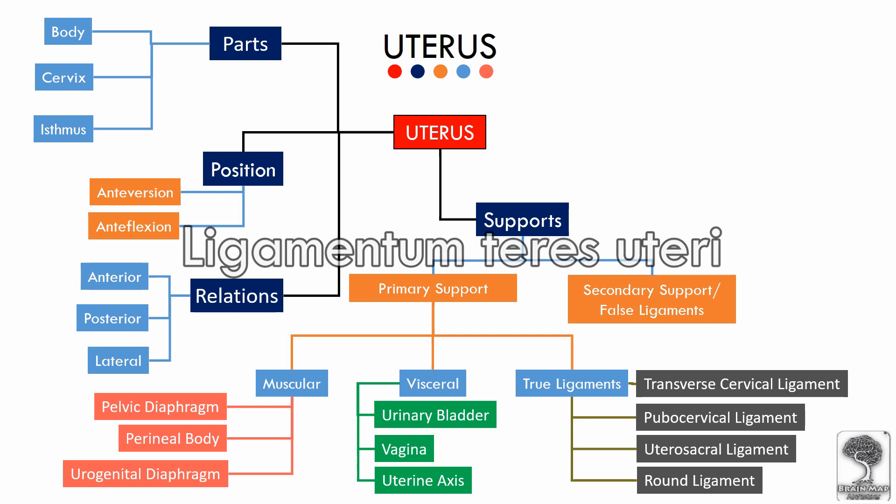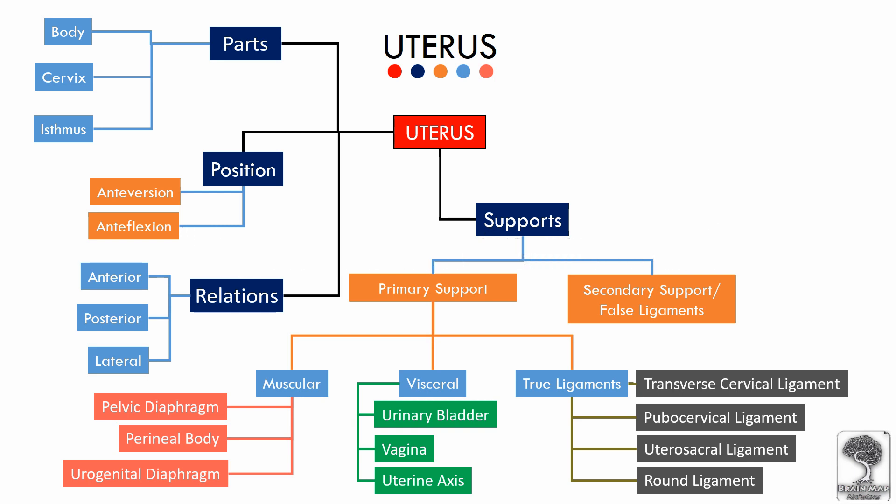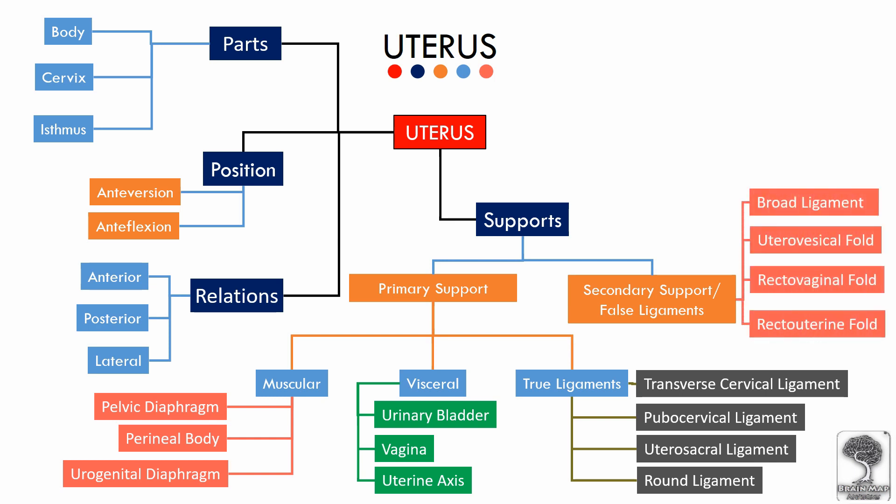The role of secondary support given by the false ligaments, which are simply folds of the peritoneum, is of doubtful value. These are the broad ligament of the uterus, uterovesical fold, rectovaginal fold, and recto-uterine fold of peritoneum.